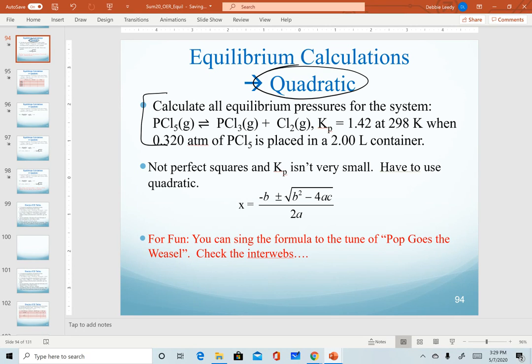For this example, we're going to use the reaction of the decomposition of PCl5. Notice that this will not be perfect squares. This equation is already balanced. We don't have a coefficient of 2 for our reactant, so perfect squares won't work. We don't have a very small K, so we can't assume that x is going to be 0. That means we are going to have to use our quadratic equation.